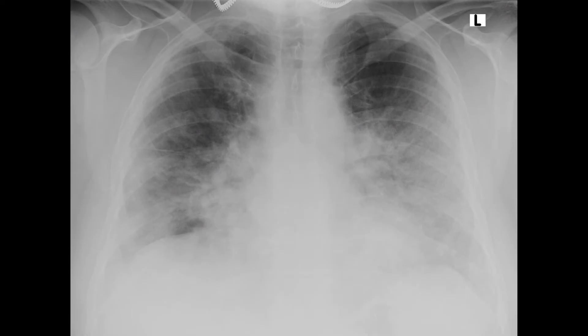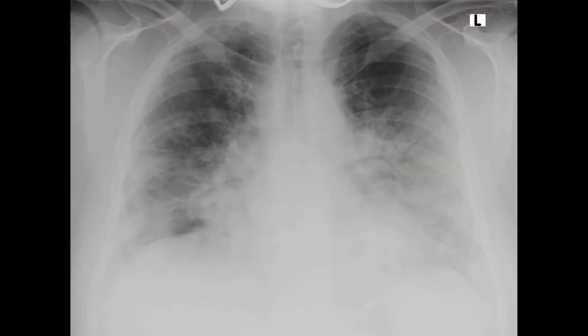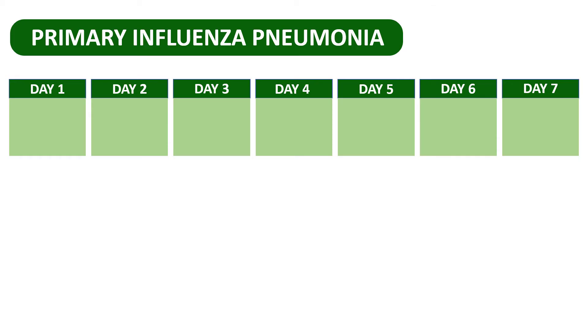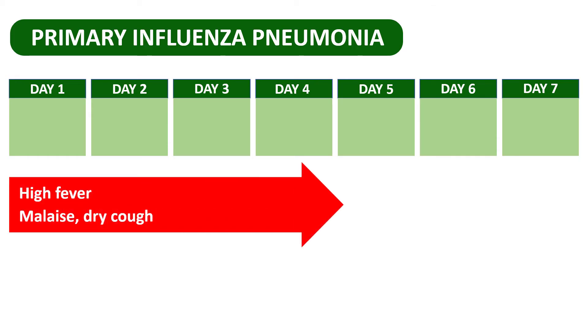Take a look at the second x-ray a day later. You can see clear progression and there is rapid clinical deterioration as well. The patient is admitted to the ICU. This brutal onset with bilateral infiltrates and rapid early progression into acute respiratory failure is typical for primary influenza pneumonia.